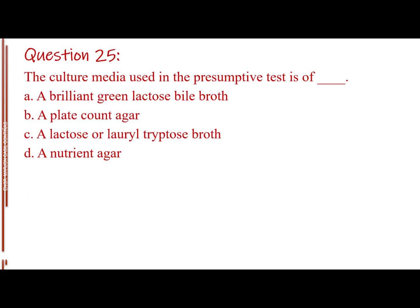Question number 25. The culture media used in the presumptive test is a blank. Letter A, brilliant green lactose bile broth. Letter B, plate count agar. Letter C, lactose or laurel tryptose broth. Letter D, nutrient agar. The answer is Letter C, lactose or laurel tryptose broth.